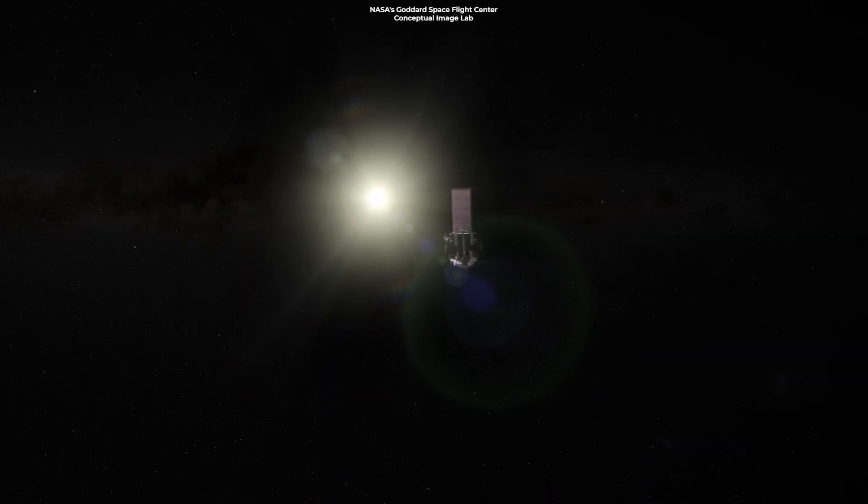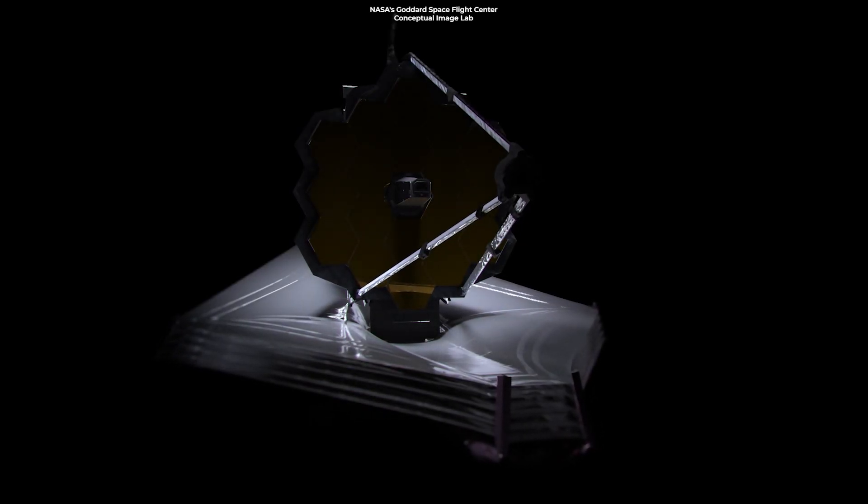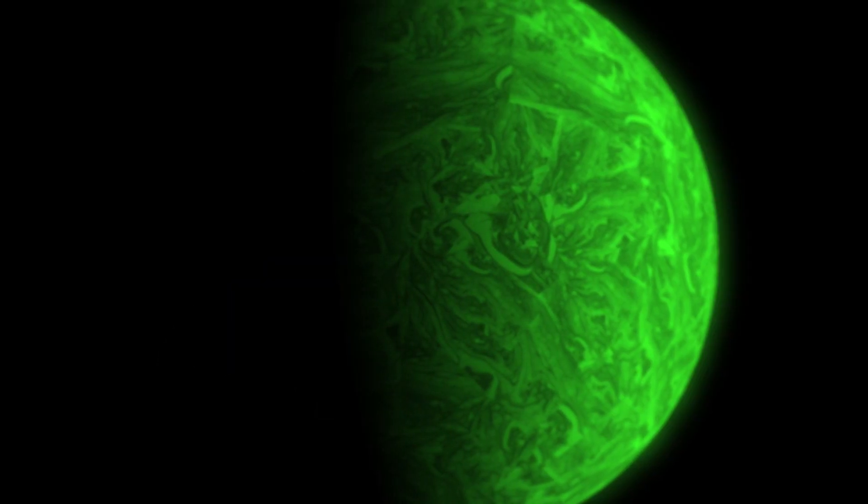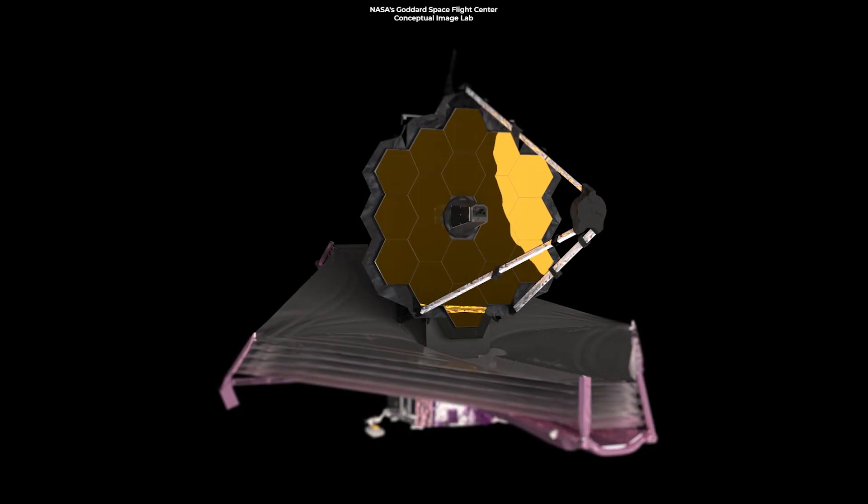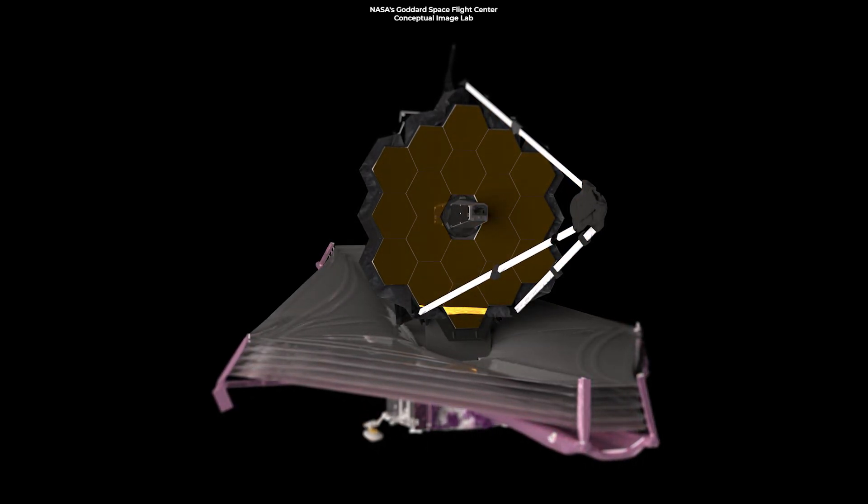It takes an incredibly powerful telescope to detect these subtle changes to the light coming from a potentially habitable exoplanet. For now, the only telescope capable of such a feat is the new James Webb Space Telescope.